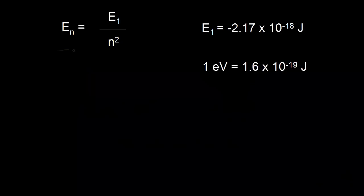In the last video, I showed you how to get this equation using a lot of physics, so it's not necessary to watch the previous video — you can just start with this video if you want. E1 is the energy associated with an electron in the lowest energy level of hydrogen, and we're using the Bohr model. We calculated the value for that energy to be equal to negative 2.17 times 10 to the negative 18 joules.